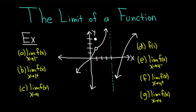Let's start with part a: the limit of f of x as x approaches 1 from the left. To figure this out, you go to the graph and look on the x-axis for the number 1. The minus sign indicates x is approaching from the left — getting really, really close to 1, infinitely close. The question is, what is happening to f of x, which is the y value? Well, the y value is getting really close to 2. So the answer is 2.